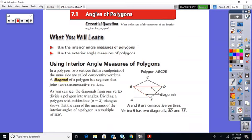As you can see, diagonals from one vertex divide a polygon into triangles. So what we're talking about in this section, when we find the sum of the measures of the angles of a polygon, it all is derived from the fact that you can split polygons up into our old friends, the triangle.